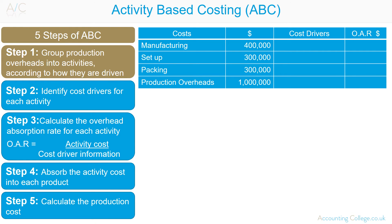The 5 steps of activity-based costing. Step 1: Group production overheads into activities according to how they are driven. For example, overhead costs are: Manufacturing costs $400,000, Setup costs $300,000, Packing costs $300,000 — giving Total production overheads of $1,000,000. For this example, we have only used three types of overheads.